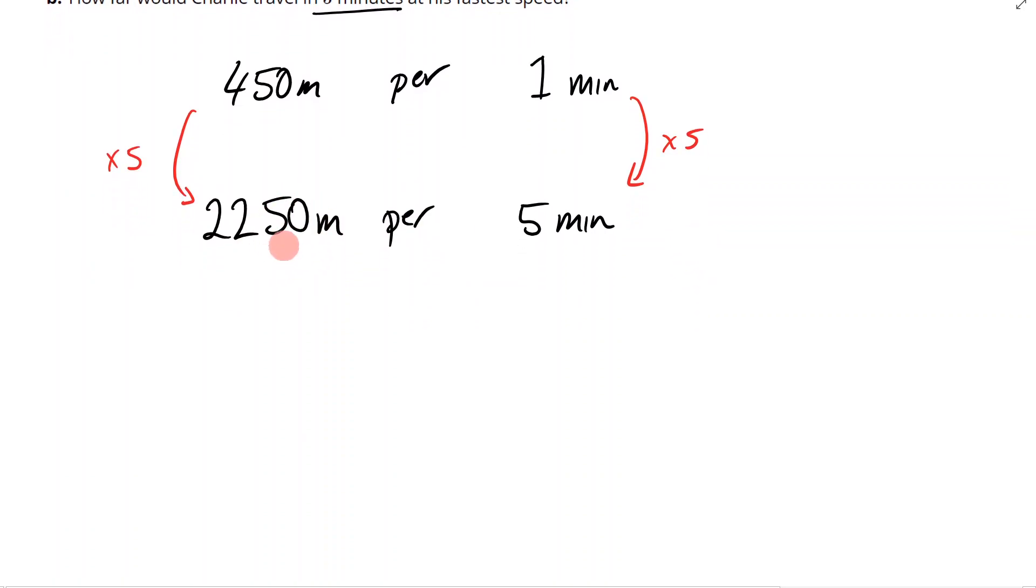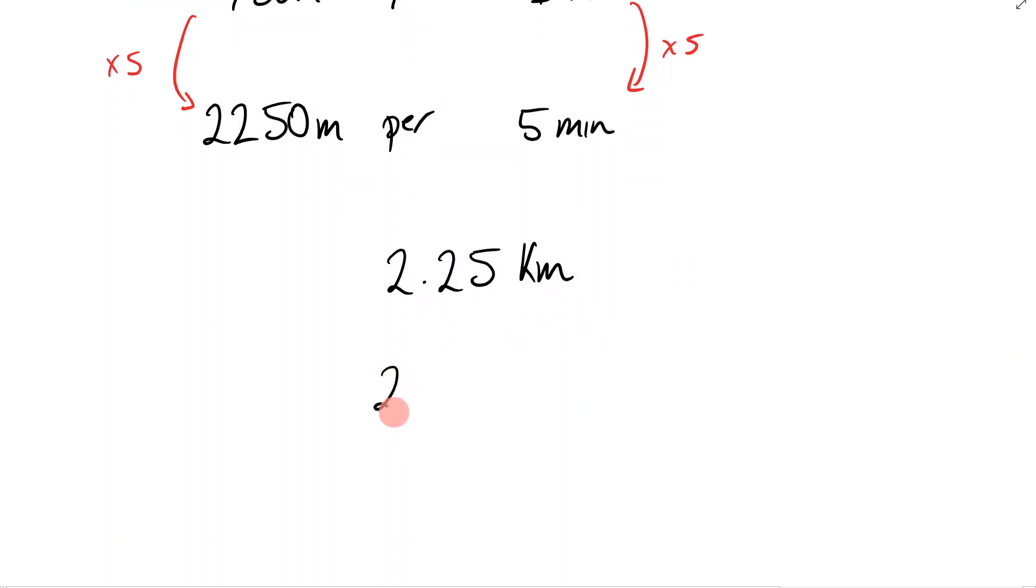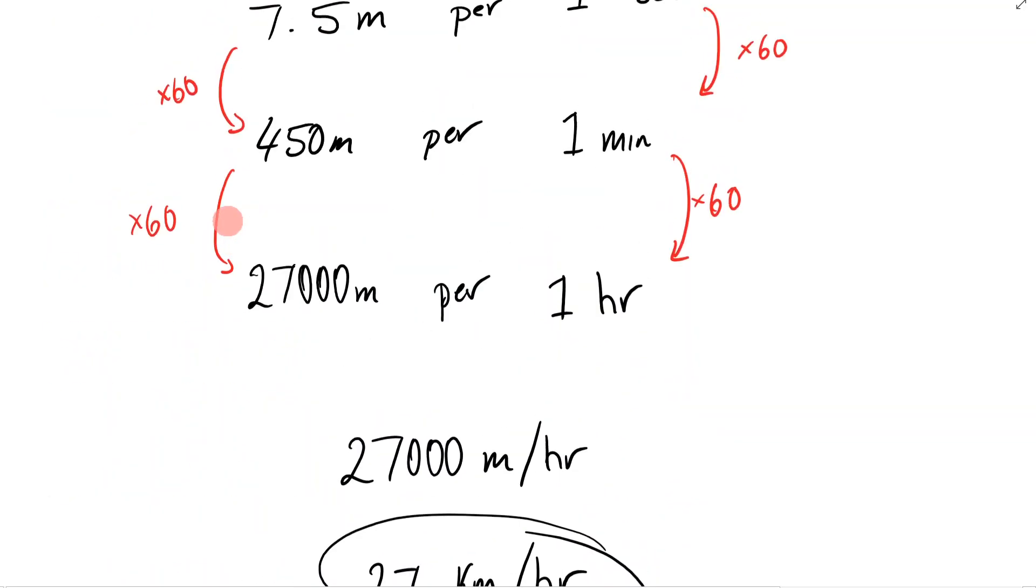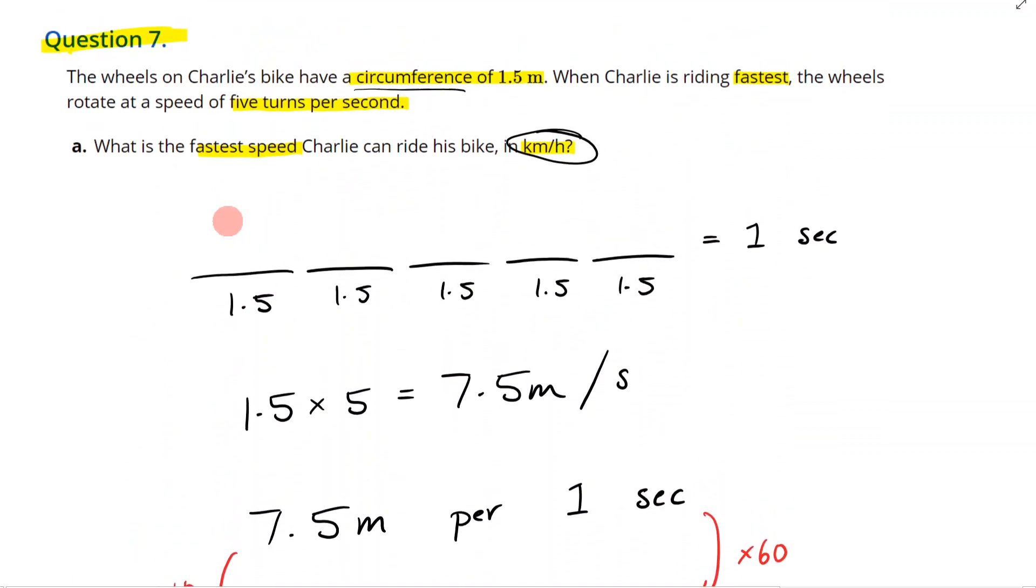Which will be 2,250 meters per five minutes. I can change this into kilometers—I'll divide by a thousand—so it's going to be 2.250 kilometers, and I don't need that zero. So that means my answer is going to be 2 and a quarter kilometers. So either of these would be acceptable. Hopefully you found this useful. So our answers are 2 and a quarter kilometers and 27 kilometers per hour. I shall see you in the next one.